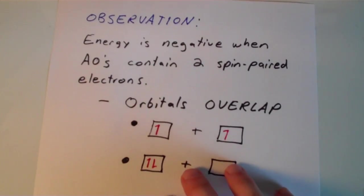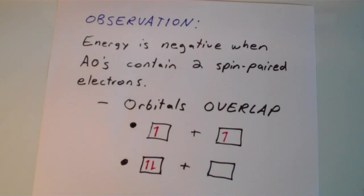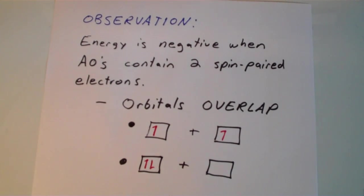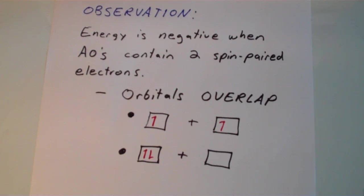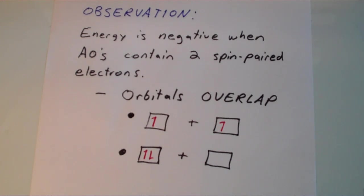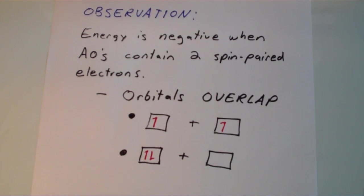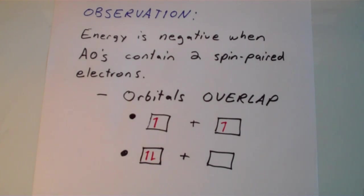And the observation in terms of electronic properties is that this minimum of energy is achieved when the atomic orbitals that are interacting together contain two spin-paired electrons. And that just means that there's two of them, and they have opposite spins. So it's kind of like they're occupying a single orbital. So this is rationalized in terms of an overlap between two orbitals.